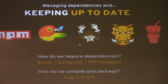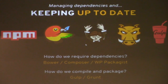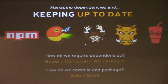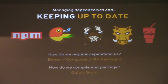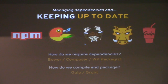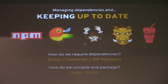And finally, keeping it up to date. As you develop your software, you're going to produce more versions and more releases, and the same goes for these different repositories. There are different tools like Bower, Composer, and WP packages that allow you to require these dependencies. If there is a critical update, you should make sure to include that in your next release so you don't have vulnerabilities. And you can use Gulp and Grunt to compile, package, and keep things up to date.